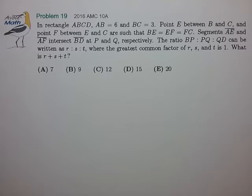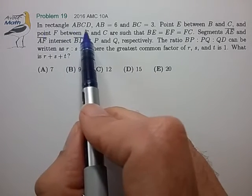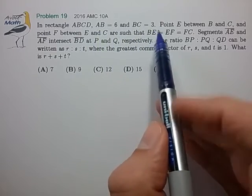Hi, this is problem 19 from the AMC 10A. In rectangle ABCD, AB is 6, BC is 3.